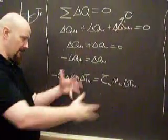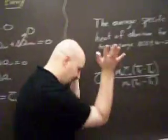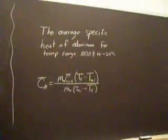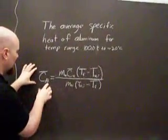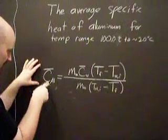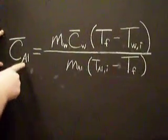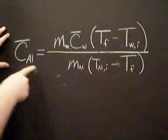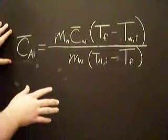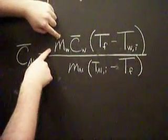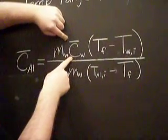Let me break it up a little bit more, and we do algebra to get this. So this is the expression for the average specific heat of aluminum for our temperature range — 100 degrees Celsius to around 20 degrees Celsius room temperature. The mass of the water, well, we can weigh that, no problem. The specific heat of the water you're given.